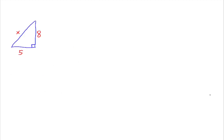Let's do an example. Here we've got a right triangle because we've got the 90 degrees there. This length is five units, this length is eight units, and the hypotenuse is x units — so we're trying to figure out the length of the hypotenuse. Using the Pythagorean Theorem, we have leg squared, so it would be five squared, plus the other leg squared — eight squared — is equal to the hypotenuse squared. Then it's just an algebra problem to solve for x.